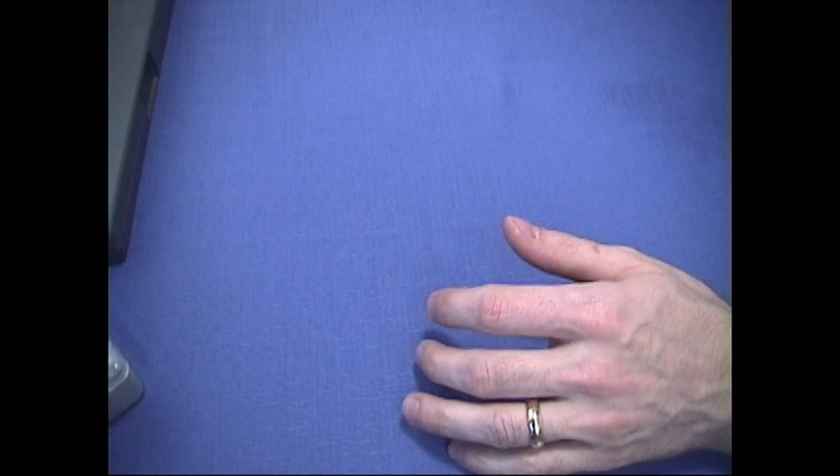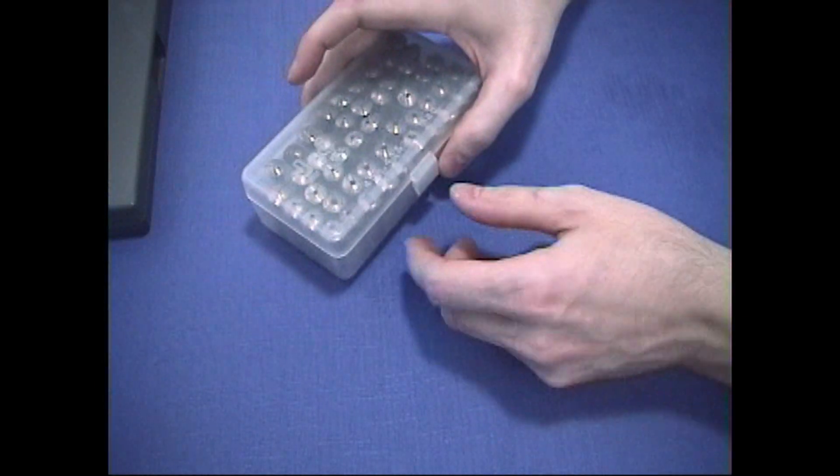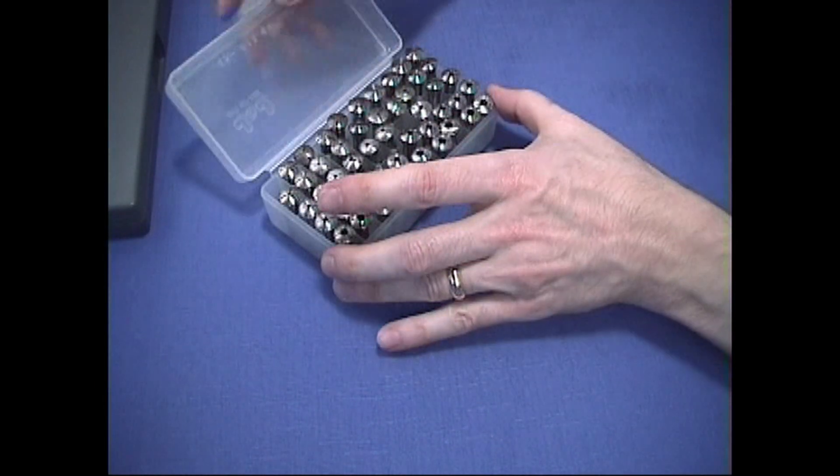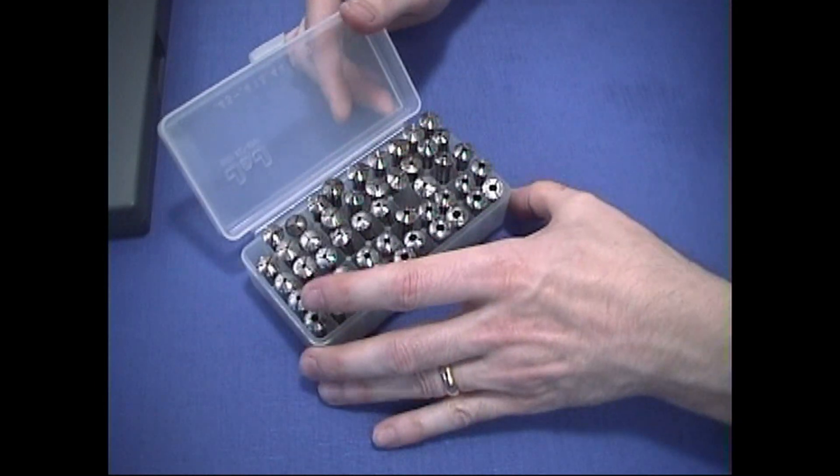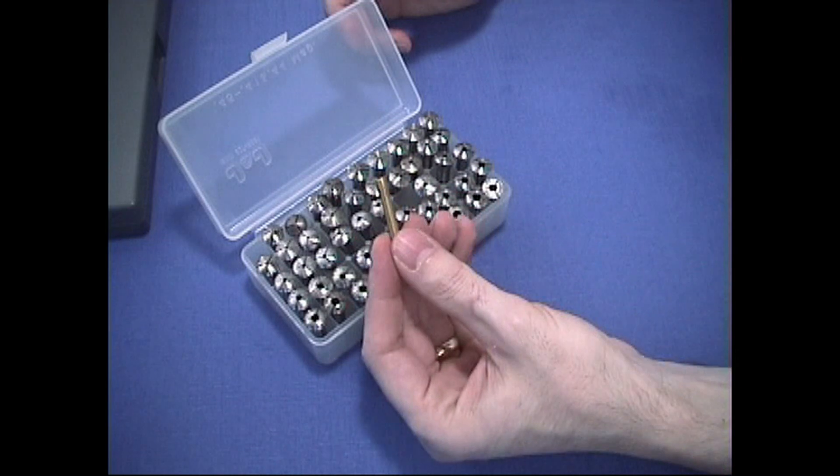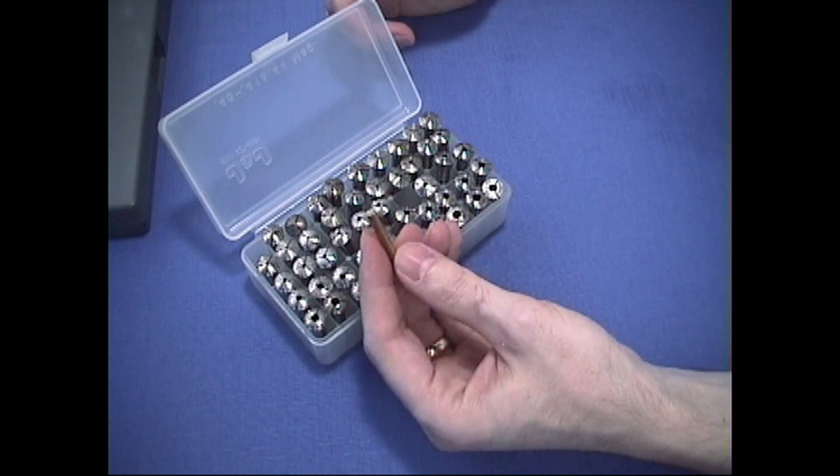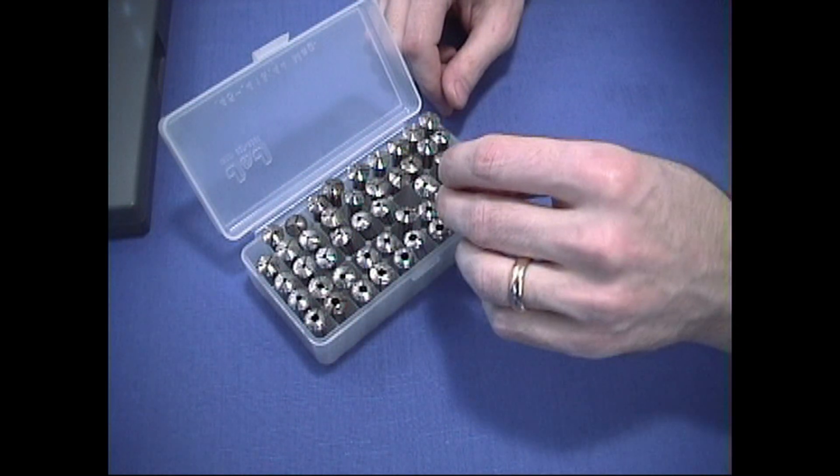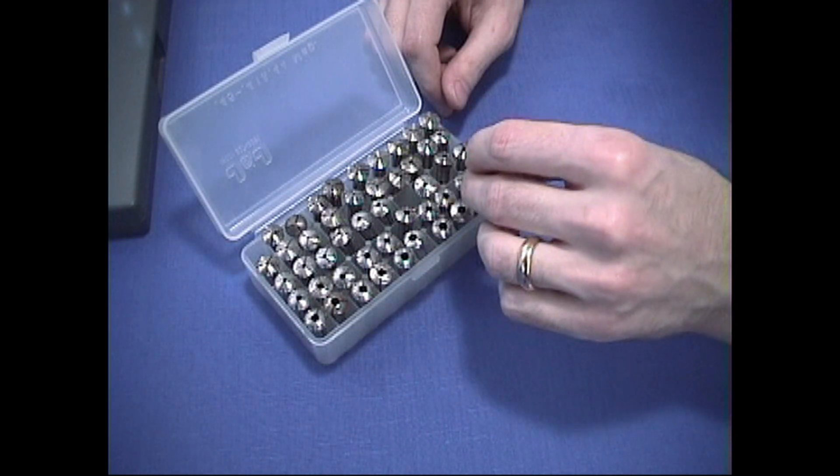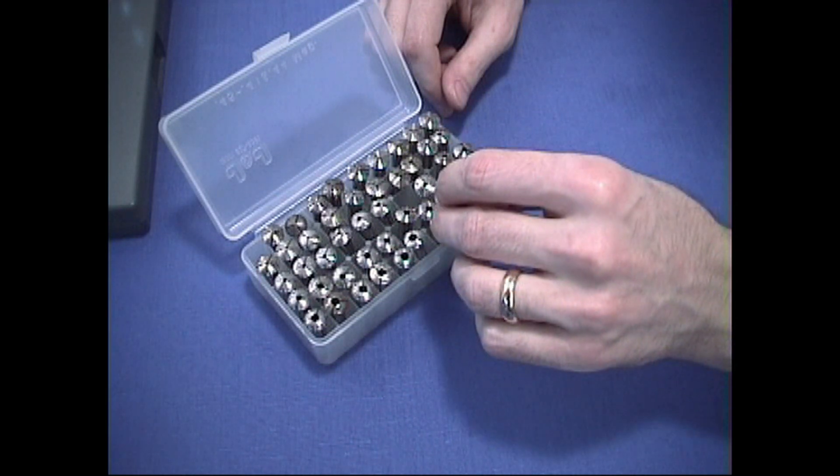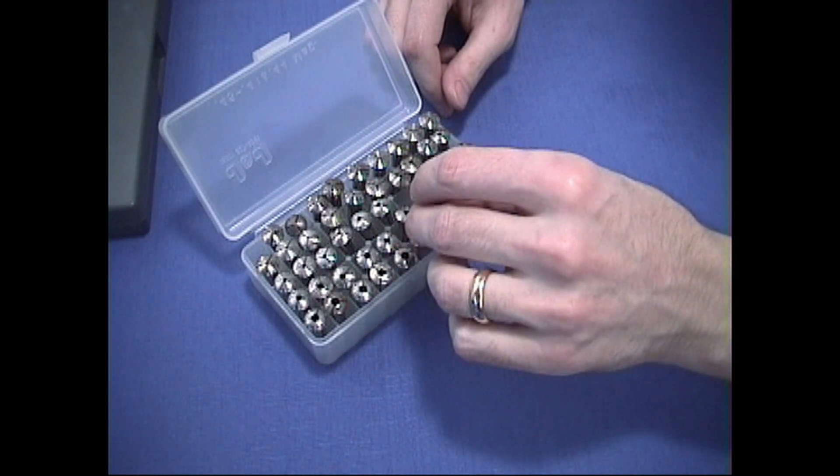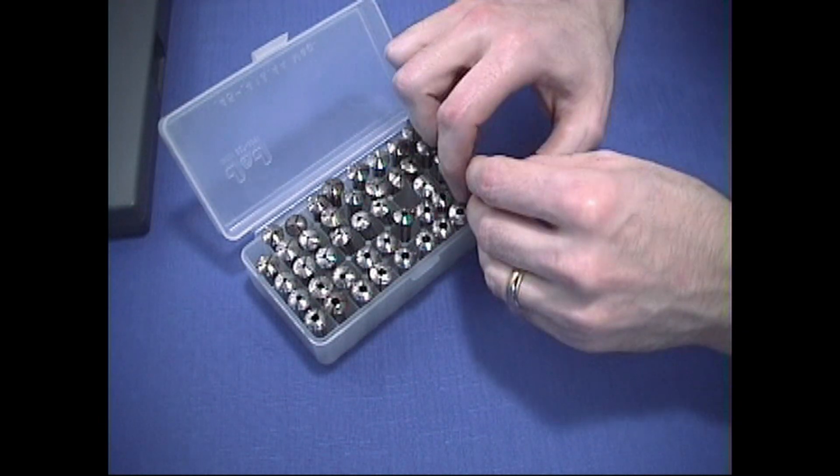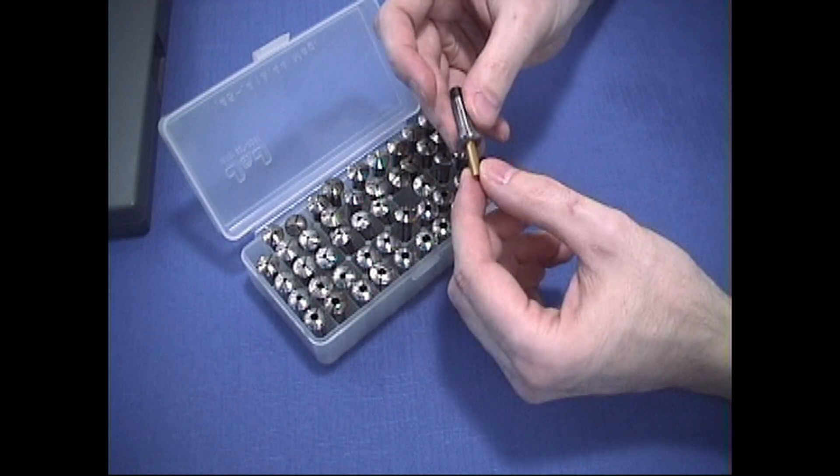There's two ways that you can select a collet. One, you can have your piece of material and measure it, and then select the collet. Or you can go through by trying to find the right size, finding the right hole that would fit best. And that would be this one here.